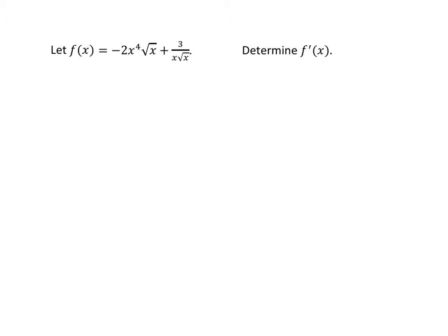Let's take a look at the first term: -2x^4√x. We notice that we have a product here, so one option would be to use the product rule for derivatives.